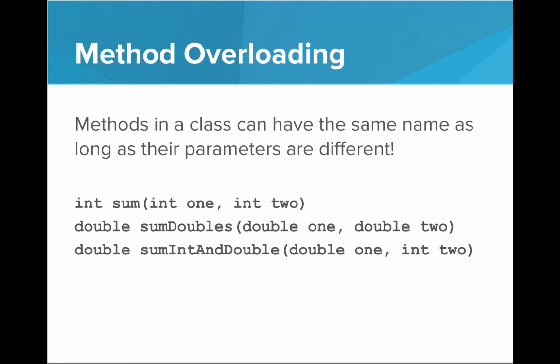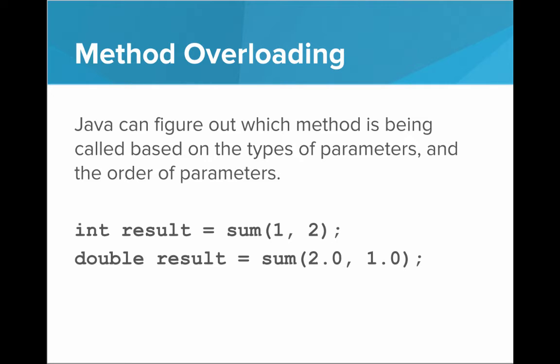So, instead of having these really long names, sum, sum doubles, sum int and double, we can call all three of these methods sum because their method signatures are different. One of them takes two ints, one of them takes two doubles, and one of them takes a mix. Java is able to figure out which method is being called based on the parameters that are being passed, and their order.